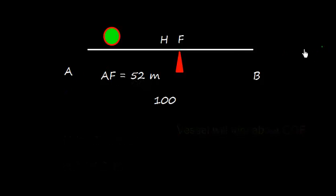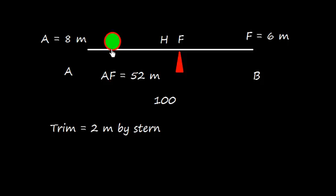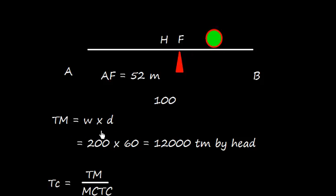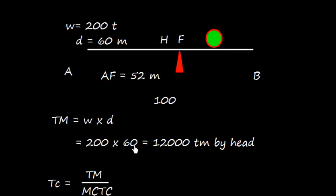Now let's assign some drafts. The forward draft is 6 meters and the aft draft is 8 meters, so the trim is 2 meters by stern. Now a weight W of 200 tonnes is shifted from aft to forward over a distance of 60 meters. This gives a trimming moment of 200 multiplied by 60, which equals 12,000 tonne-metres by the head, since the weight is shifted forward.